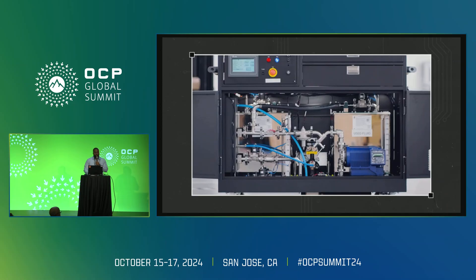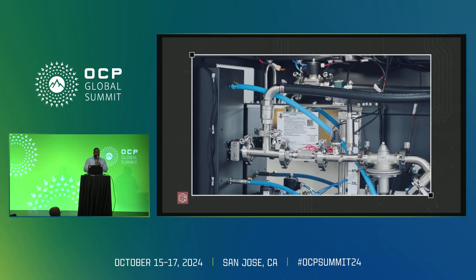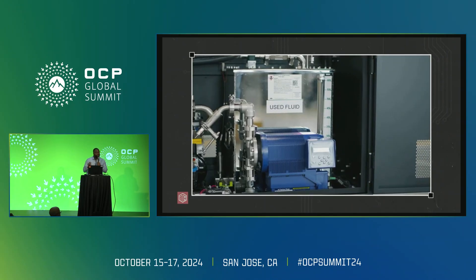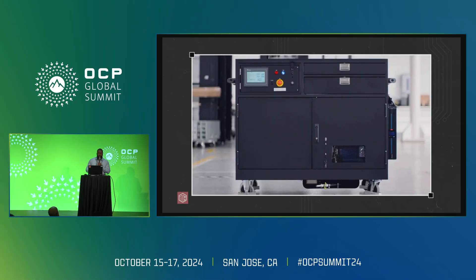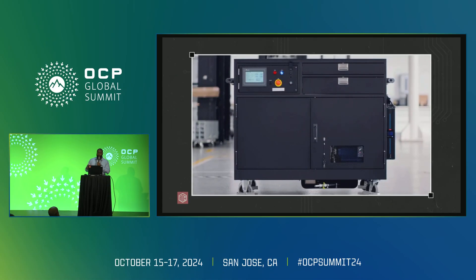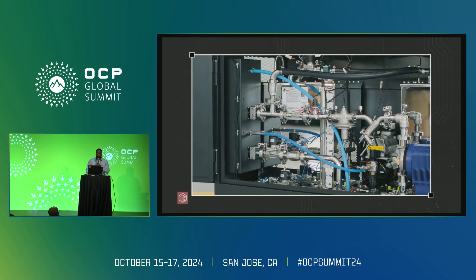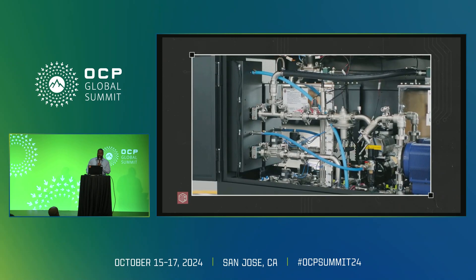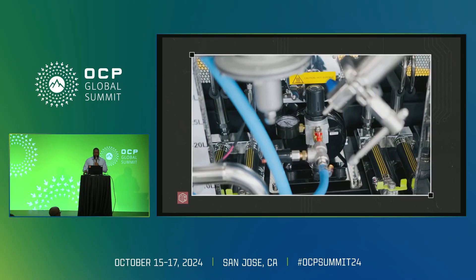Inside the fluid cabinet you can see two reservoirs — new fluid on the left and used fluid on the right. We keep them separated to avoid contamination: if a rack has been running a while and there might be pollutants in the coolant, that goes into the used reservoir, while fresh fluid from the drum goes directly into a rack being filled for the first time. We also have a 25-micron filter, a pressure reducer, check valve, solenoid valves, and a few other components.